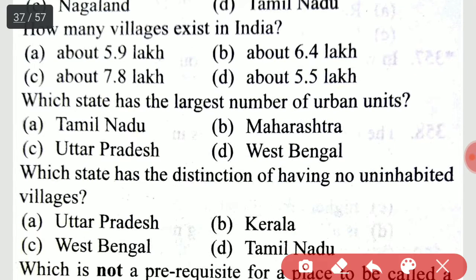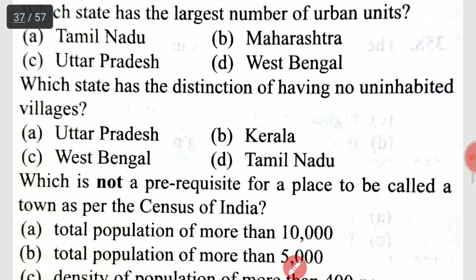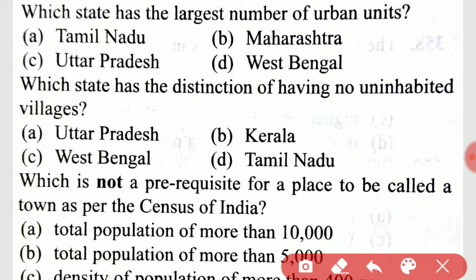Which state has the largest number of urban units? It is Uttar Pradesh that has the largest number of urban units. Which state has the distinction of having no uninhabited villages? It is option B, Kerala.